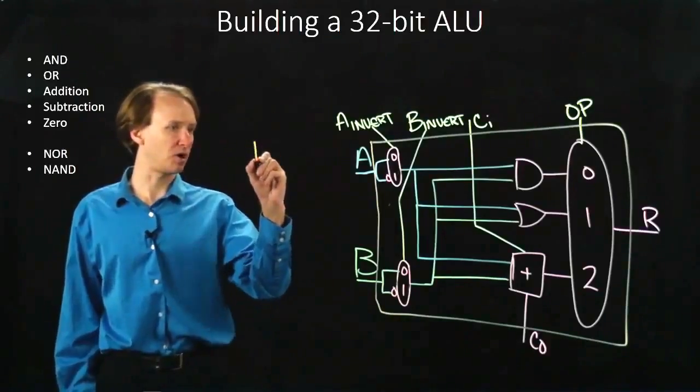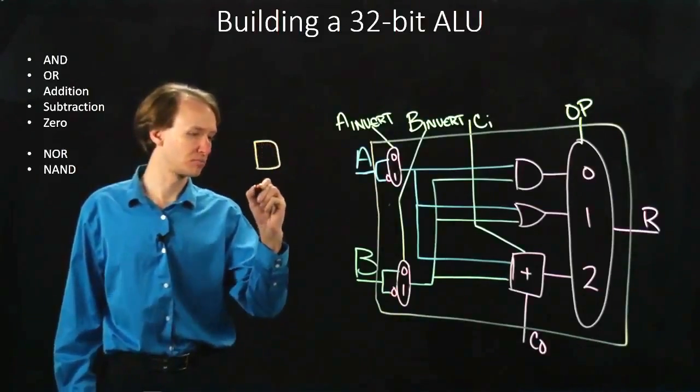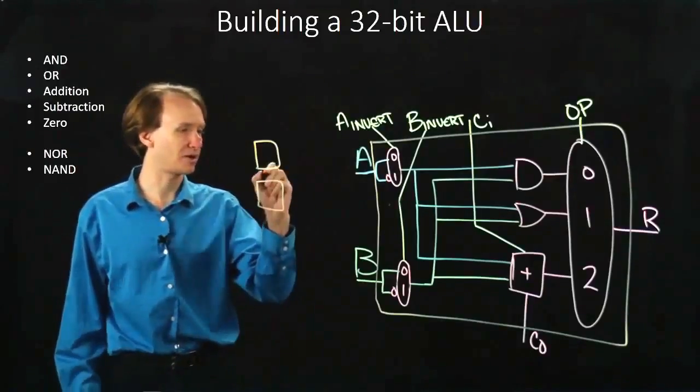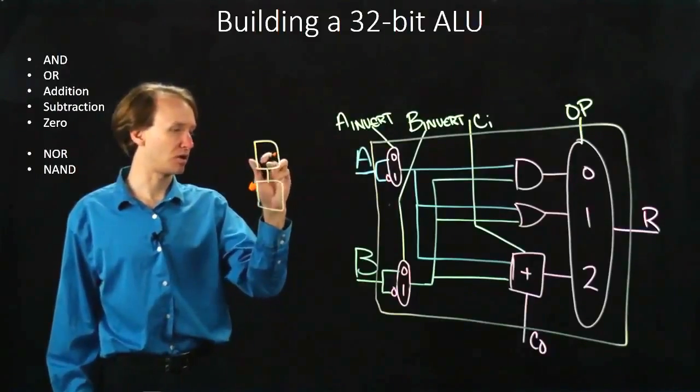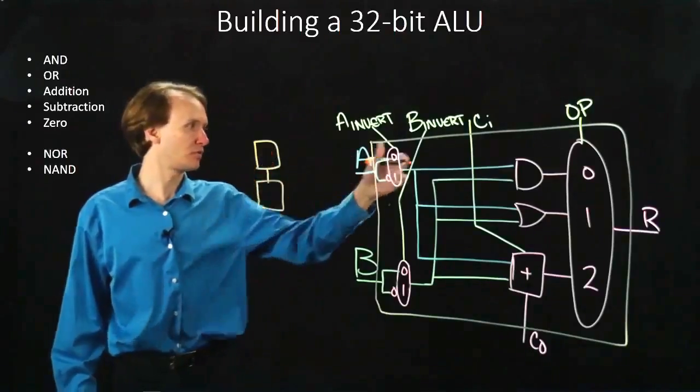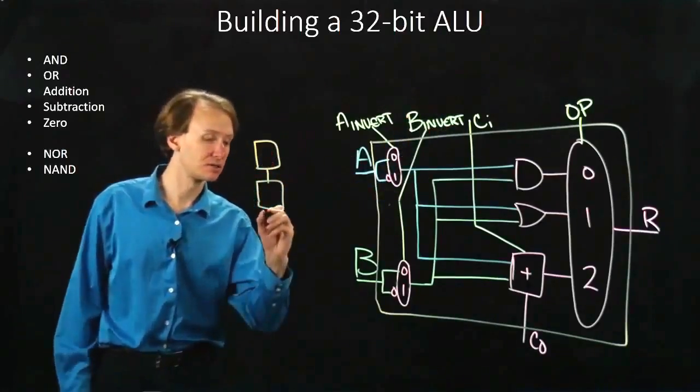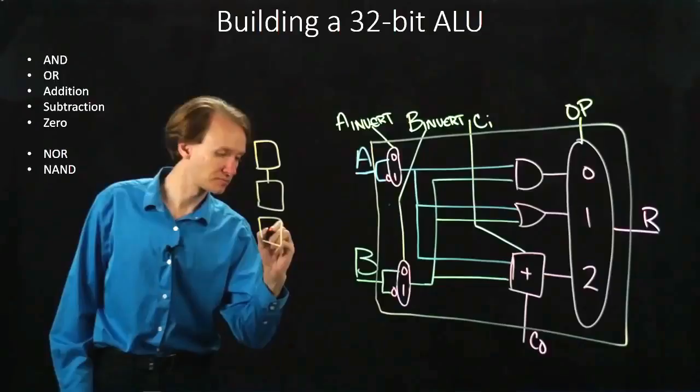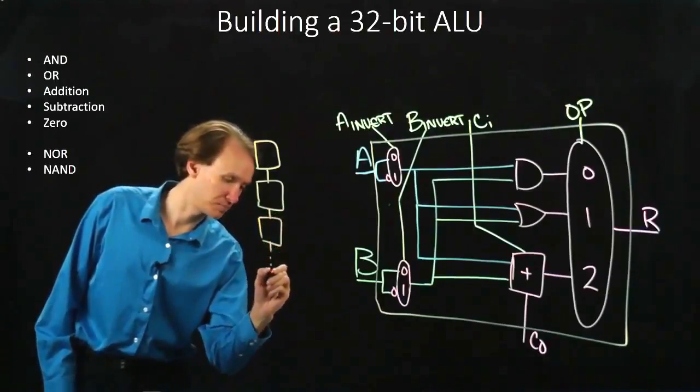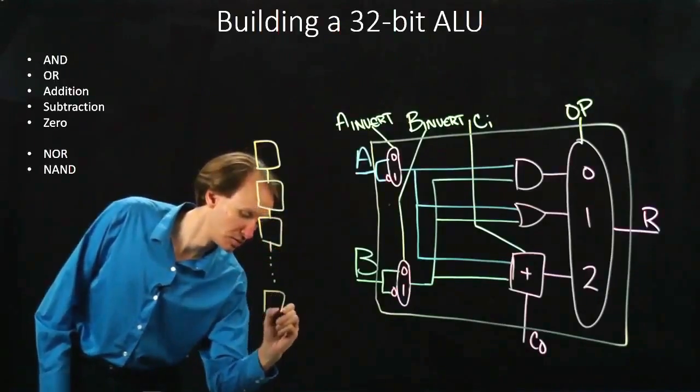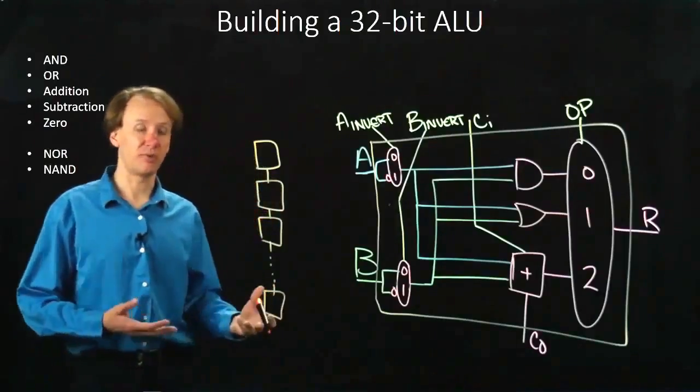If I take these boxes and I connect them kind of the way we've done before with, say, our adders, where our carry out from the first one feeds in as the carry in to the next, then I could stack up, say, 32 of these, which would enable me to do my addition.